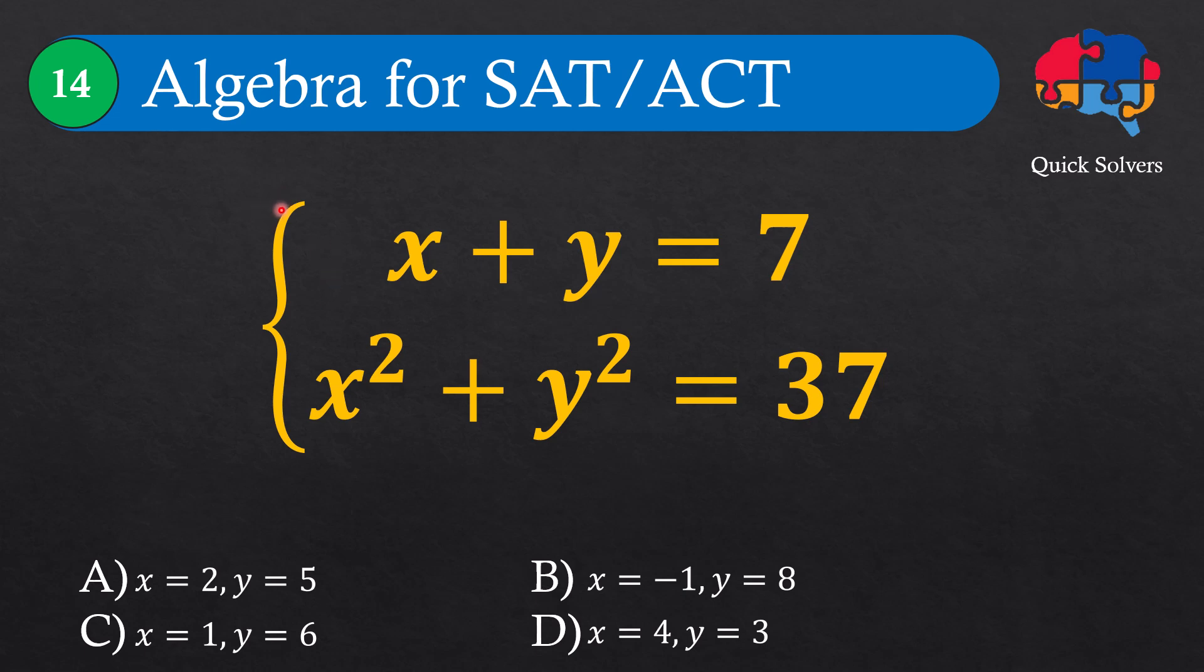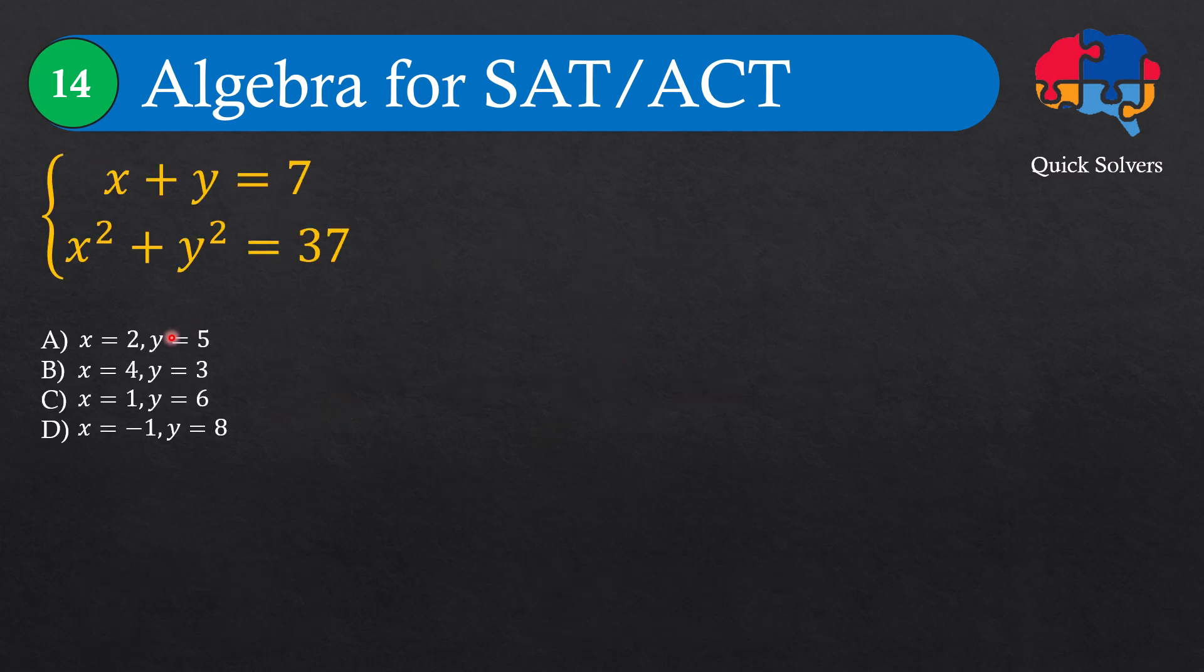Hello everyone and welcome to our YouTube channel Quick Solvers. Here I want to find x and y where we have x + y = 7 and x² + y² = 37. This is a good question for you if preparing for SAT or ACT, and the difficulty level of this question is easy.